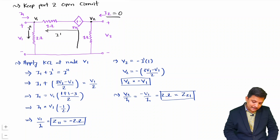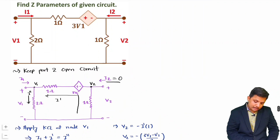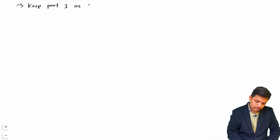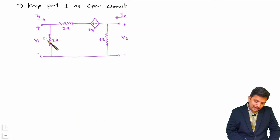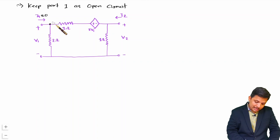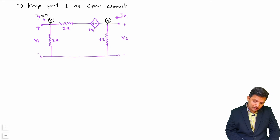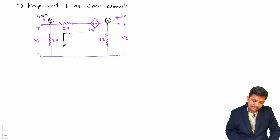In the second case, we keep port 1 as open circuit, which means I1 equals 0. V1 will be the voltage at the input node and V2 at the output node. Since I1 is 0, whatever current flows in one branch must continue into the connected branch. Let us label these currents I' and I''.